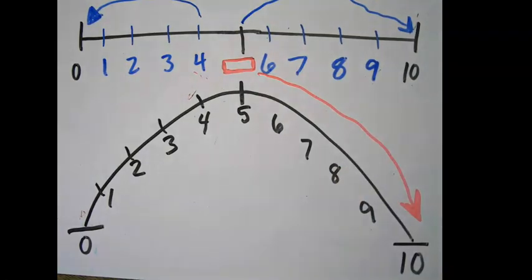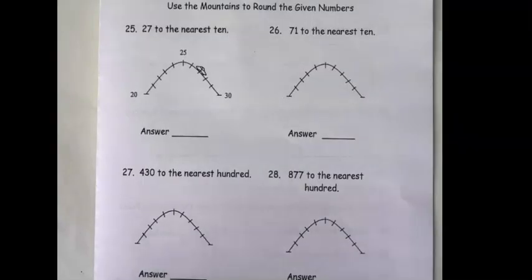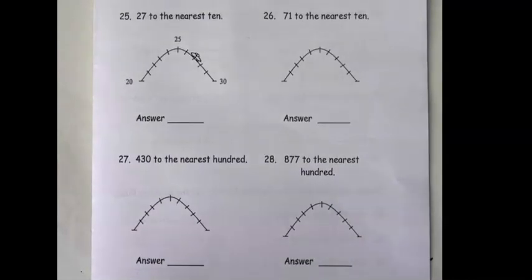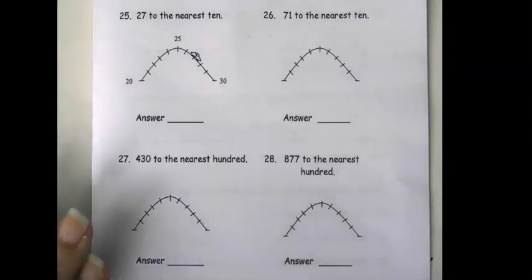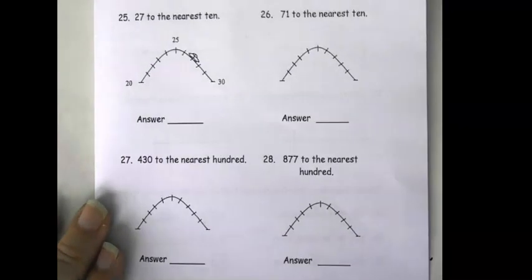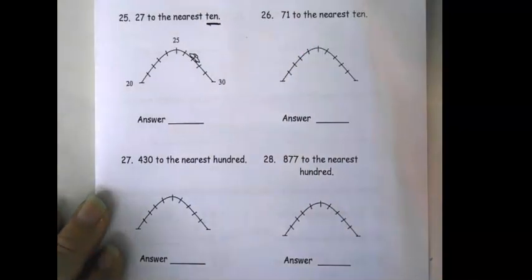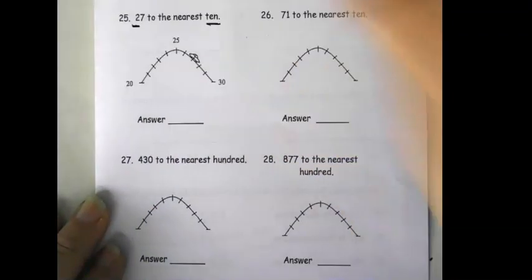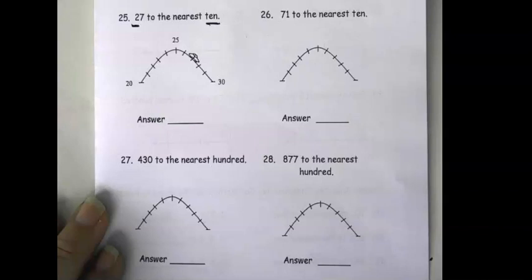Let's practice a little bit. We're going to use this mountain model. This first one says, round 27 to the nearest 10. I need to be careful that I'm rounding to the tens place. So, I'm going to go ahead and underline the tens place, which in this number is 20.